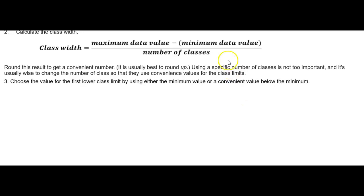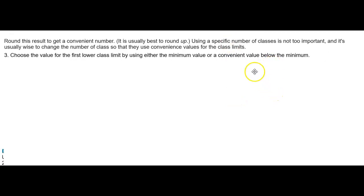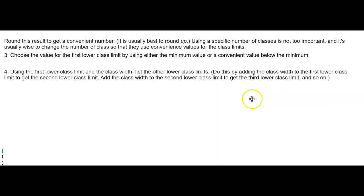Number four, using the first lower class limit and the class width, list the other lower class limits. You do this by adding the class width to the first lower class limit